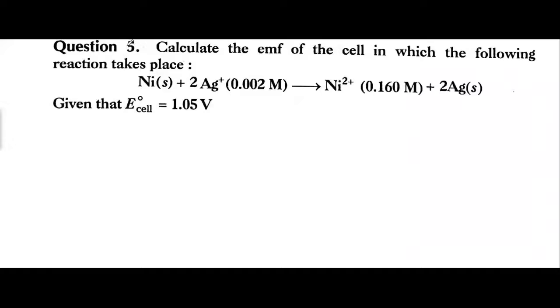Question number 5 NCERT: Calculate the EMF of the cell in which the following reaction takes place: Ni(s) + 2Ag⁺(0.002 M) → Ni²⁺(0.160 M) + 2Ag(s). Given that E°cell = 1.05 V.